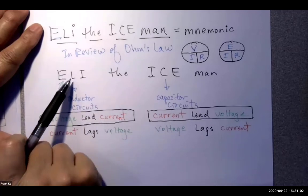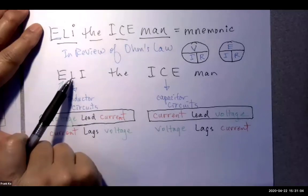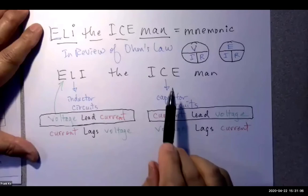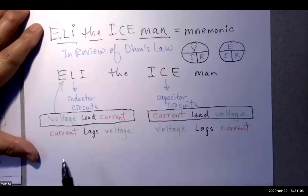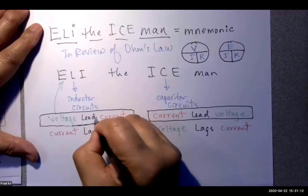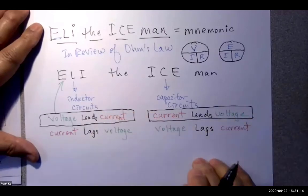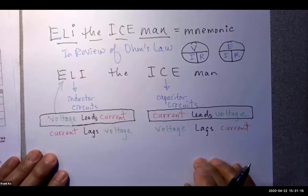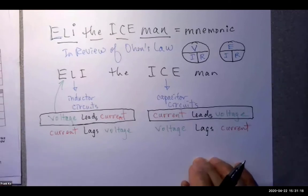How do I know that's an inductor circuit? Because L is a symbol for inductance. And in capacitor circuits, because C stands for capacitor, current leads voltage. And let's see if that is the case.